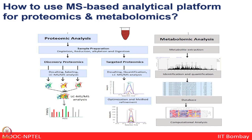How to use mass spectrometry-based analytical platforms for proteomics and metabolomics analysis: from the same sample, you can deplete abundant proteins and process those for reduction, alkylation, and digestion for discovery-based workflow, label-free quantification, or targeted quantification to look at the host proteome or plasma proteome. From the same sample you can also extract metabolites and use mass spectrometry or NMR to identify possible metabolites, obtaining a picture of all protein and metabolite changes happening in individuals.